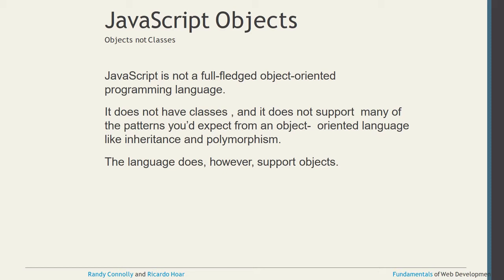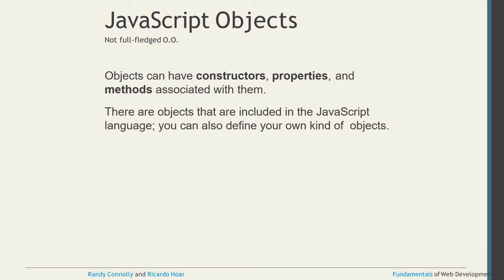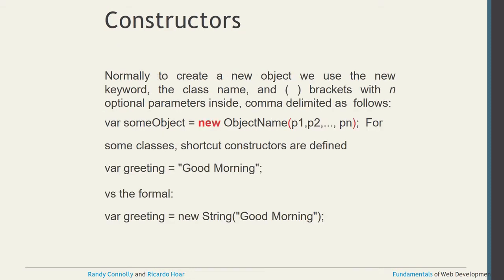JavaScript only supports objects. In JavaScript, objects can have constructors, properties, and methods associated with them. There are built-in objects included in the JavaScript language, and you can also define your own custom objects in JavaScript.